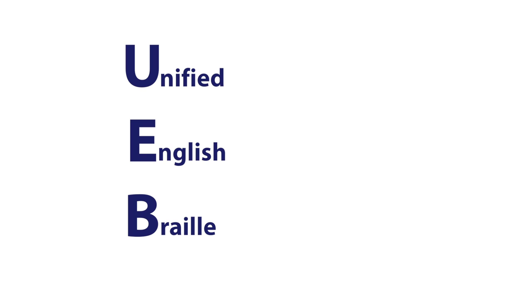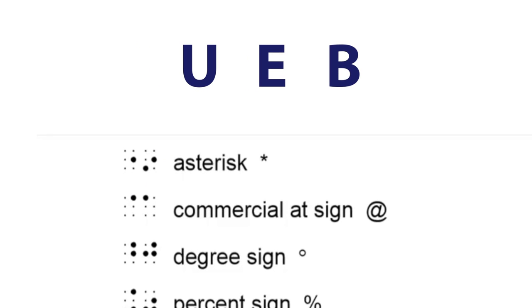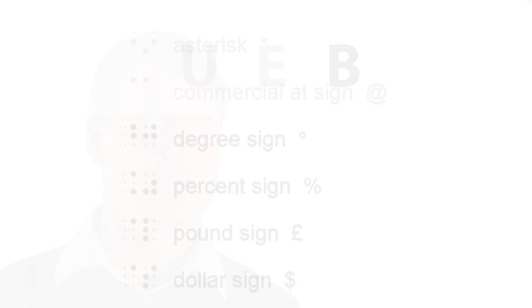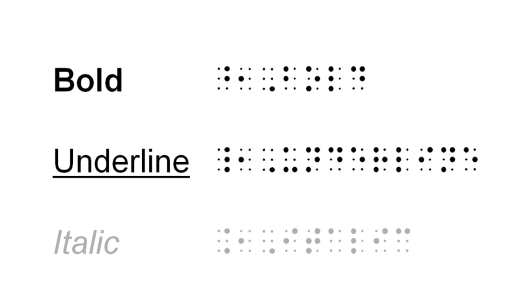Unified English Braille, as the name suggests, is one Braille code across the English-speaking world. As a Braille reader, Unified English Braille gives me more access to different symbols, a richer variety of type form indicators such as bold, underline, and italic.